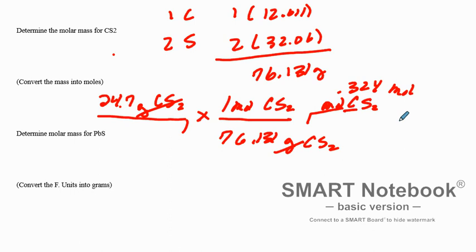The next one: determine the molar mass for PBS. So that's one PB at 207.2 and one sulfur at 32.06. When we add those together we get 239.3 grams PBS.